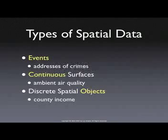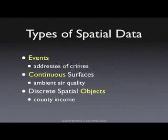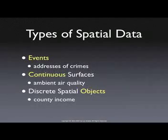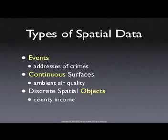A third type of spatial observation is what we refer to as discrete spatial objects. The importance of it is that it's not continuous. For example, when you deal with counties, counties are not a continuous surface — counties are individual entities, counties are countable. You can have very many of them, but never a smooth continuous surface. You can't stick another county in between two counties. In other words, they exhaust the space.